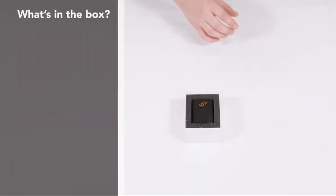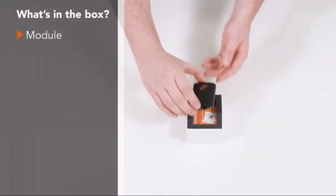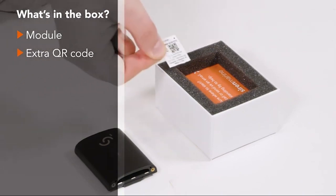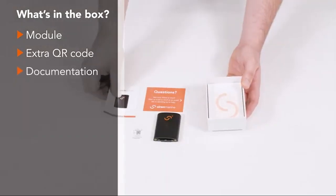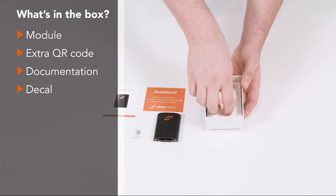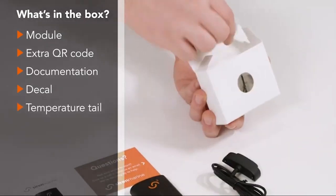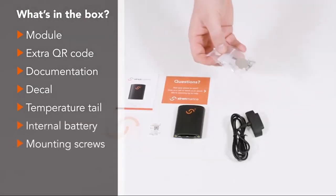To begin, unbox the sensor and remove the module. The package also includes a secondary QR code, support documents, a decal, the temperature tail, internal battery, and mounting screws.